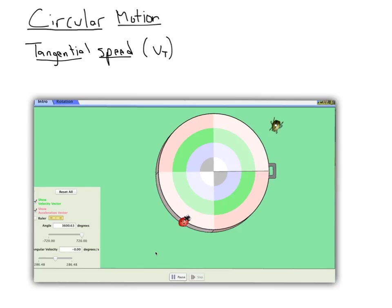It's abbreviated with a V sub T, and let's take a look at what it looks like here. I brought in two ladybugs for us to look at, and I'm going to put them on a turntable, like a DJ record player type turntable, and we're going to let them turn.